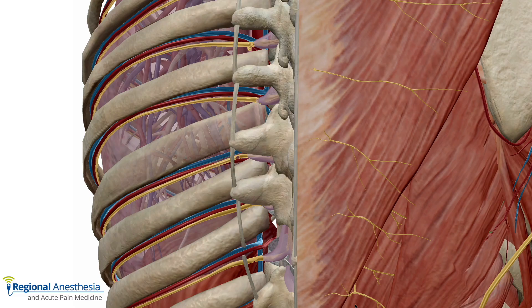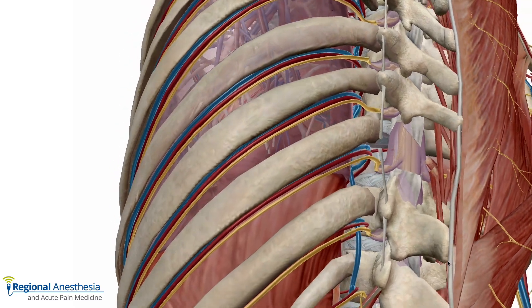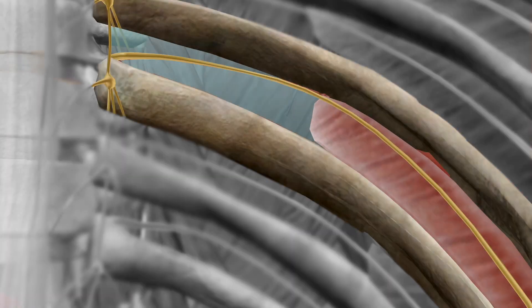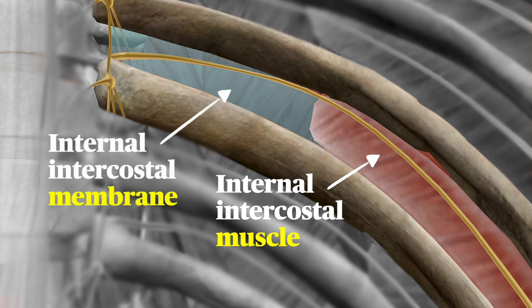The ventral rami of T2 through T11 travel around the chest wall with their associated numbered ribs, innervating the thorax and abdomen. If we look from inside the chest at the ribs, we first have to peel away the parietal pleura. We then see the intercostal nerves running just underneath each rib in the costal groove. Superficial to the neurovascular bundle on the lateral chest wall is the internal intercostal muscle, which comes to an end at the angle of the rib — about five centimeters off the midline — and gives rise to the internal intercostal membrane.